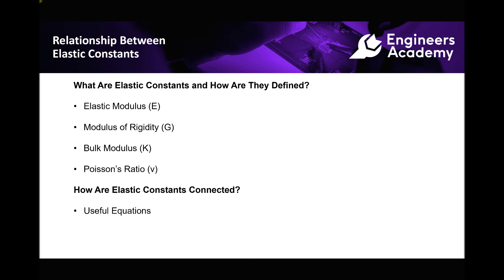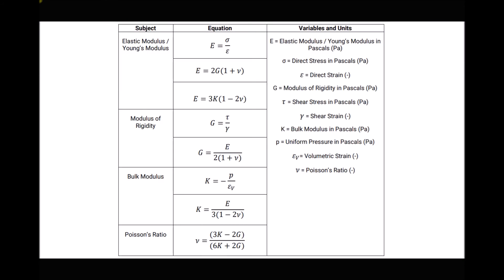Next we need to consider how these elastic constants are connected. There's a range of useful equations that we can use to determine each of these elastic constants when only two of them are known. At the top we have equations for the elastic modulus: one where we can calculate E when the modulus of rigidity G and the Poisson's ratio ν are known, and another where we can calculate E when the bulk modulus K and the Poisson's ratio are known. Conversely, if E and one other constant are known, we can rearrange to find the remaining constant — for example, knowing E and K allows us to find ν.